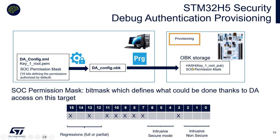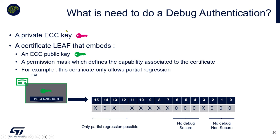What is needed to do a debug authentication? We need a private ECC key and a leaf certificate that embeds the corresponding public key and the permission mask. For example, a certificate that allows only non-secure partial regression has all other bits set to zero — meaning if you have this certificate, you can only do this action and nothing else.